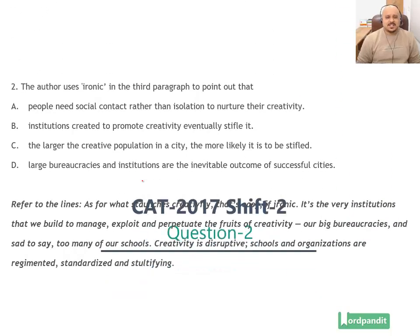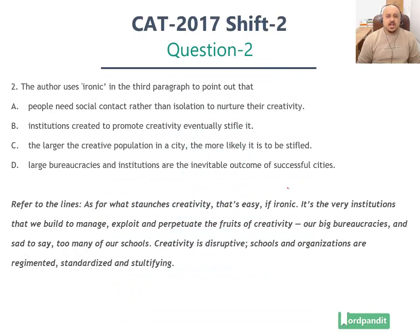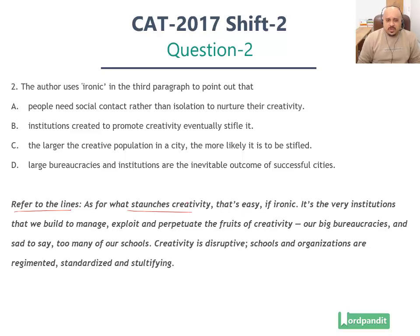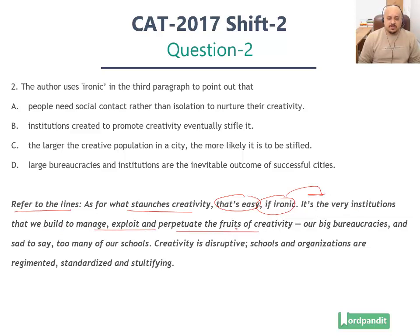Let's go to the context and understand it first, then we'll understand why he used this particular word. The lines say: 'As for what staunches creativity, that's easy if ironic.' So what stops, what forestalls creativity from fully developing — that's easy to identify even if it is ironic. Now what is the reason? It's the very institutions that we built to manage, exploit and perpetuate the fruits of creativity.